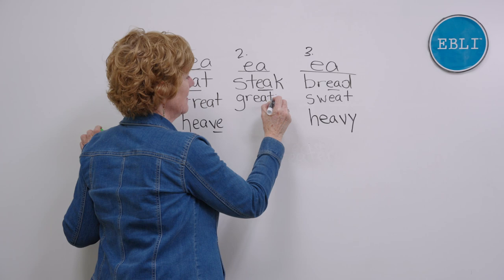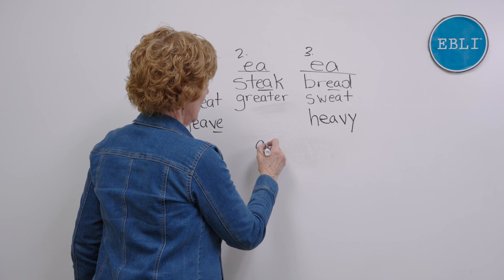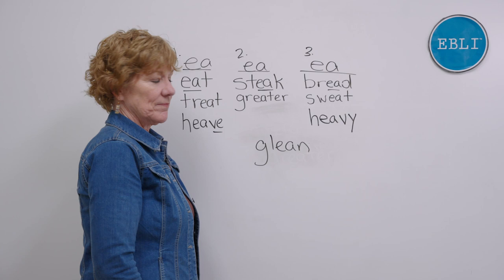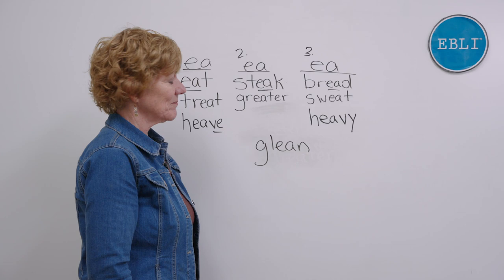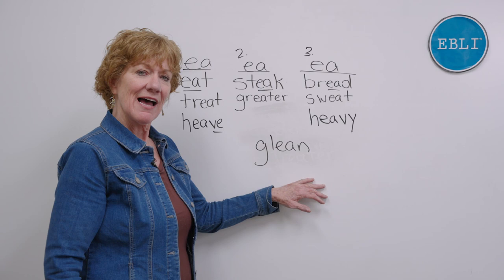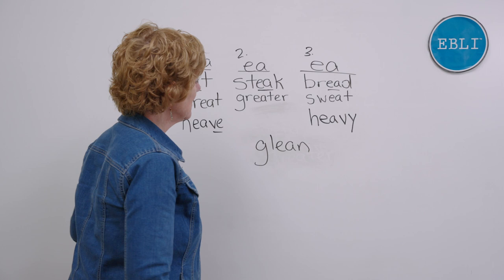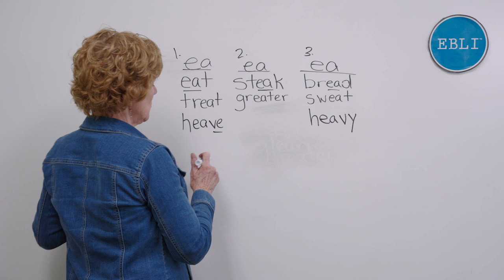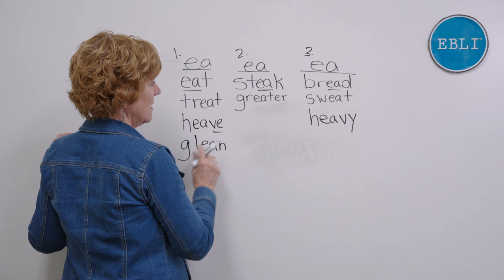Here's a word you may not be familiar with — try each of these sounds: 'e,' 'a,' and the short sound. Which column does it go in? This is the word 'glean.' You're going to glean a lot of information about the English code from doing this. 'Glean... eat' — do you hear the same sound? 'Glee-e' — yes! Column one gets this one. Say every sound as you write 'glean.'